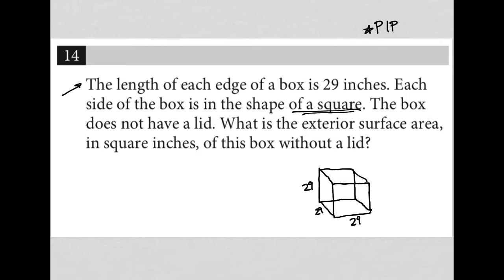The question goes on to say the box does not have a lid, so it's open at the top. It just has a bottom, a front, a back, and a left and right side. What is the exterior surface area in square inches? These are all inches, so 29 inches—unit-wise we should be good on that. What is the exterior surface area in square inches of this box without a lid?